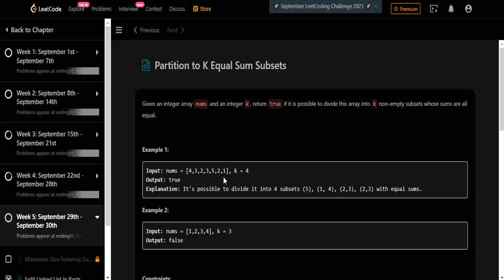Let's consider the first example. If you see we have to divide the array into four equal parts. So if we divide 5,1 then 4,2,3 and 2,3 all the sums are equal and we have divided it into four equal sums. So we are going to return true. Let's see how we're going to approach this problem.